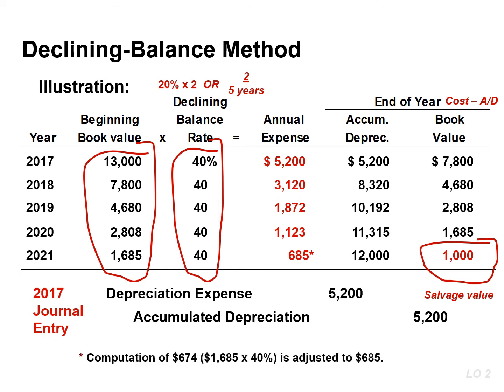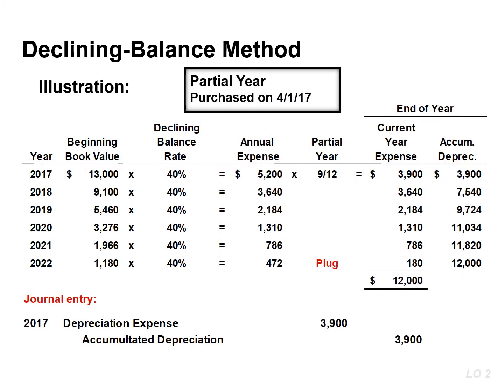For example, note the adjustment of $685 in the last year. Just like with straight line, when an asset is purchased during the year, it is necessary to prorate the depreciation in the first year. If this company purchased the asset on April 1st, depreciation expense in the first year would be $3,900. That is calculated by taking the annual expense of $5,200 and multiplying that by 9/12.